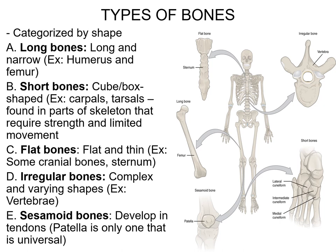When categorizing bones by their shape, there are five different types. The first one is called a long bone. A long bone is just long and skinny — it's longer than it is wide. A great example is your femur bone, which gives you this really long rectangle-looking shape. You get this in pretty much all of the bones in your arms and legs. Your upper arm bone, your lower arm bones, even your metacarpals and your fingers are all considered long bones. Your shin bones are also very long and skinny, and your metatarsals and toe bones also fall into this long bone category.